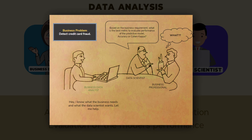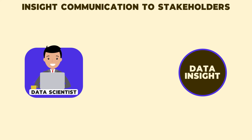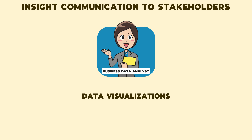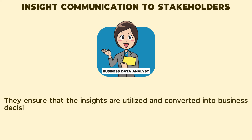As seen in this image, a data scientist communicating in technical terms like accuracy and Cohen's Kappa is entirely new for a business professional, but quite common in the data world. Since business professionals don't speak the data language, they won't be able to help the data scientist. Here comes the important role of a business data analyst, who knows both the business and technical sides and has the capability to solve any problems that arise. Once the data scientist provides data insights, they cannot be directly understood or used by the business — they need to be translated into the business language to aid decision making. A business data analyst uses data visualizations, storytelling, and narratives to communicate the analytics results in a simple, non-technical format, ensuring that the insights are utilized and converted into business decisions, thus benefiting the business.